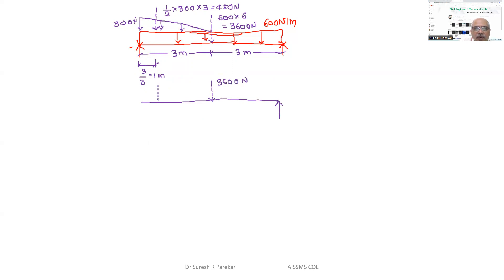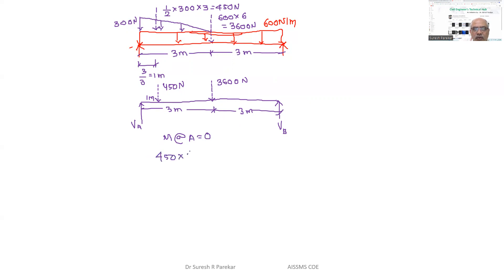So we have 3600 N and 450 N as the equivalent loads, with V_A and V_B as reactions. The triangular load acts 1 meter from the right end, the UDL acts at 3 meters, and total beam length is 6 meters. Taking moment about A = 0: 450 × 1 + 3600 × 3 − V_B × 6 = 0. Solving, V_B = 1875 Newtons.